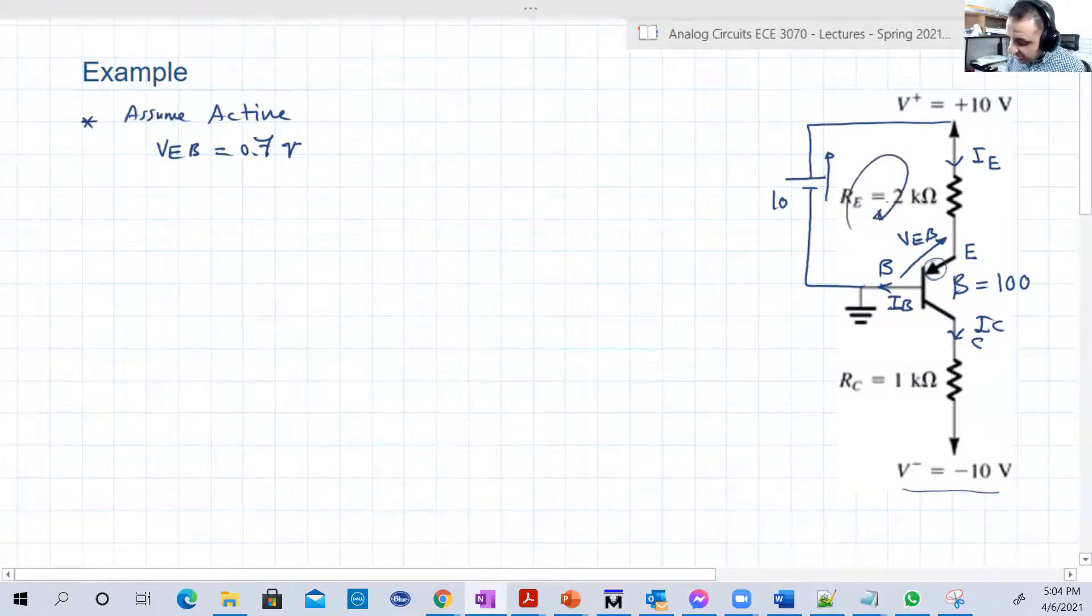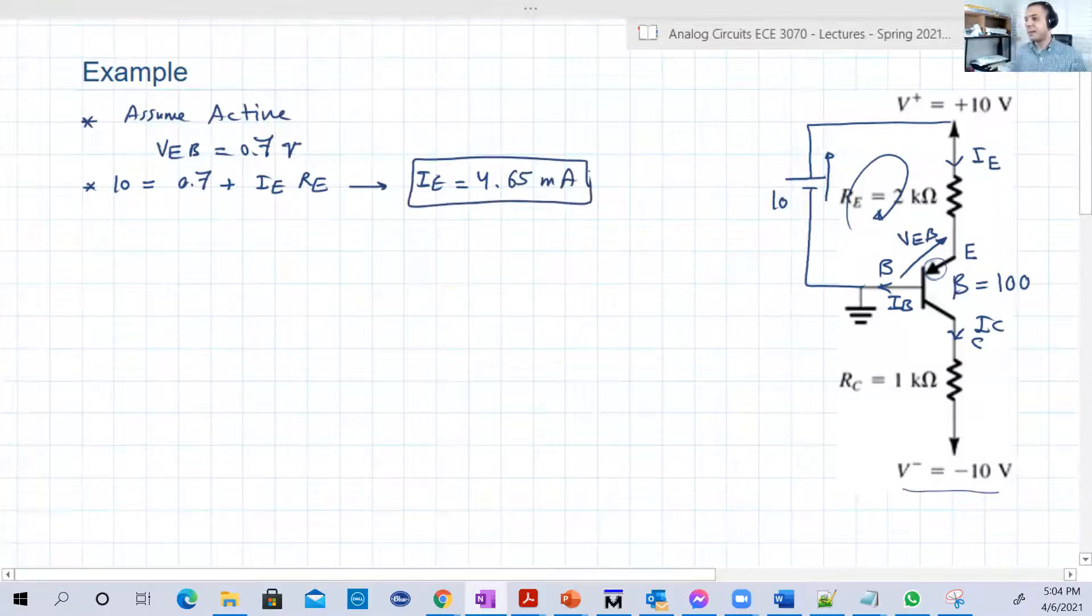So let's do KVL here. So in that loop we have 10 equals 0.7 plus IE RE. Remember RE is known, so basically you can determine here IE. So IE equals 4.65 milliamperes. Beta is 100. Again IC equals beta over beta plus 1 times IE, which is called alpha IE. Since the beta is 100 over 101, which is basically approximately 1, 0.99, so basically it's approximately equal to IE, 4.65.